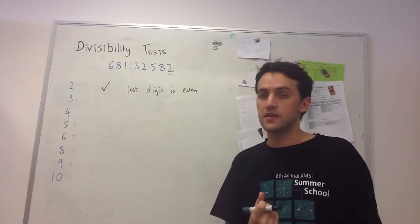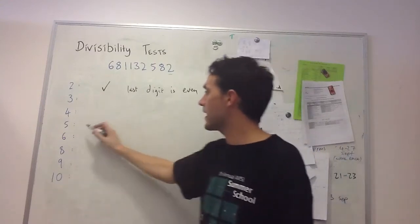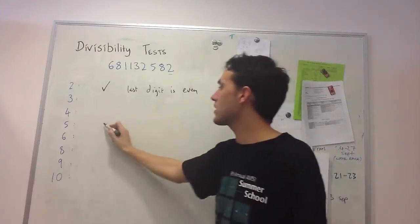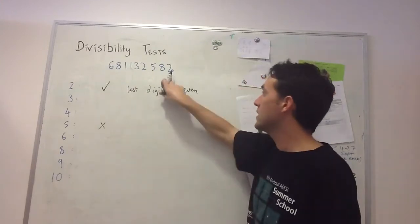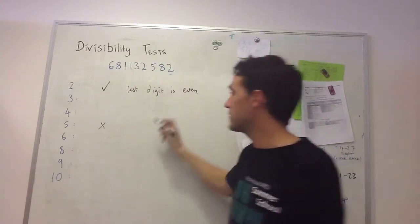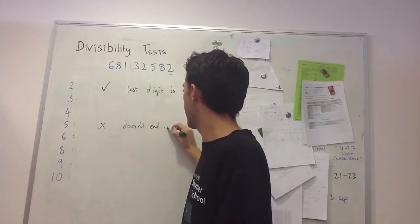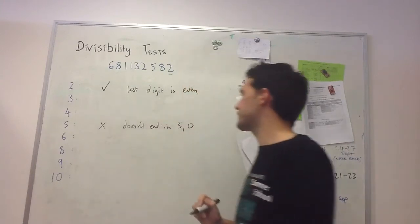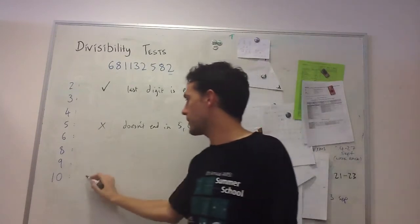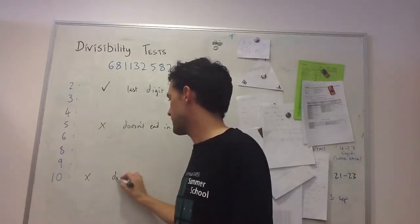I'll do the other tests that use the last digit while we're here. This number is not divisible by 5 because it doesn't end in 5 or 0, and it's not divisible by 10 because it doesn't end in 0.